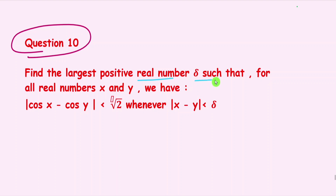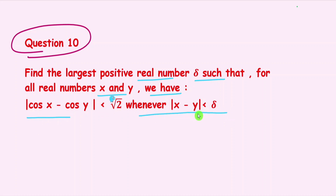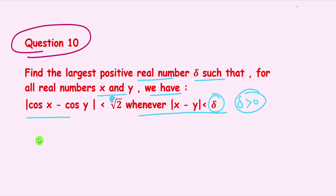Question number 10 is from real analysis. The question says: find the largest positive real number delta such that for all real numbers x and y, mod of cos x minus cos y is less than root 2, whenever mod of x minus y is less than delta. So we have to find the largest value of delta where delta is greater than zero.